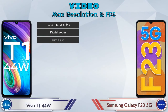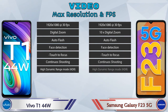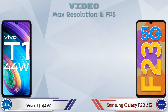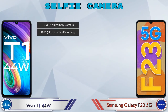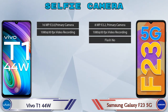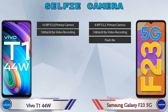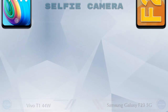Talking about video camera: in both phones, seven different types of features are available. Now talking about the front selfie camera: the T1 44W has a single camera with two different features available, and the Galaxy F23 5G also has a single camera with three features available.